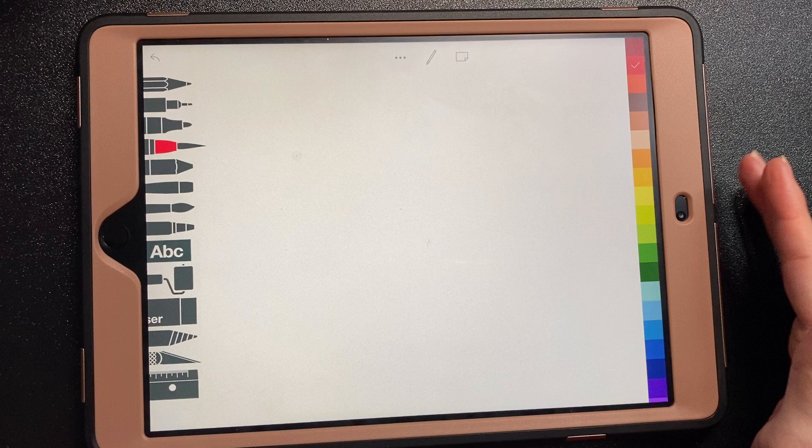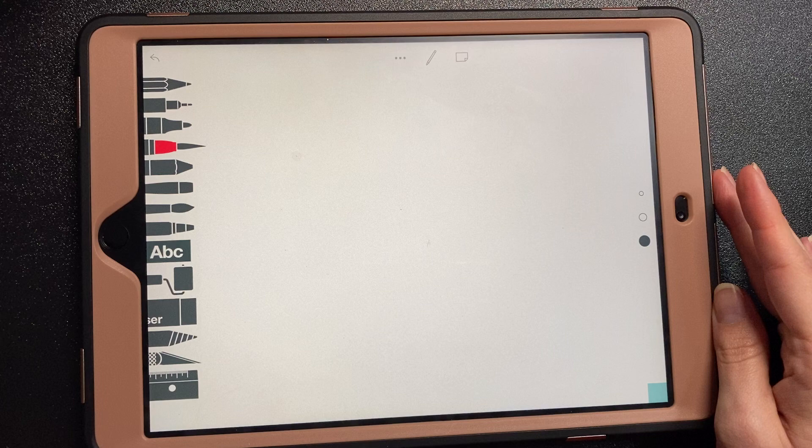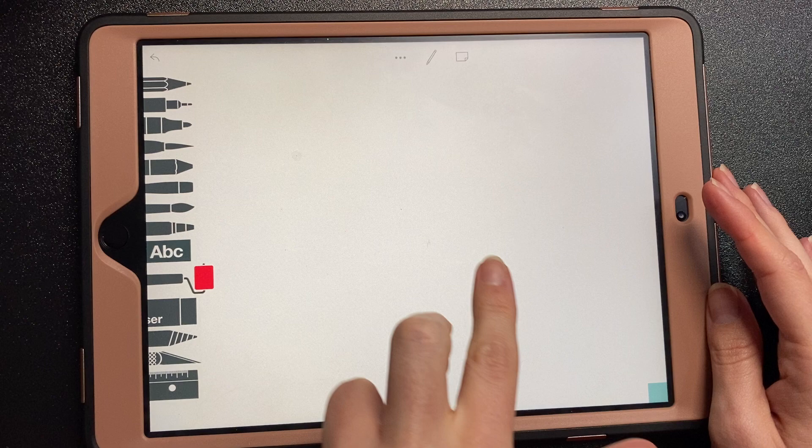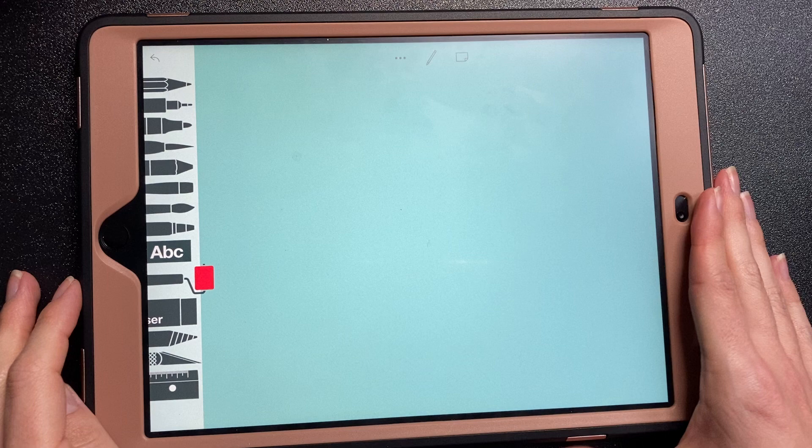I'm going over to my color picker. I think I'm going to choose light blue. First, I need to choose my fill tool, make sure I have it on the gradient that I want, and then I can tap and change my entire screen to the color that I chose.